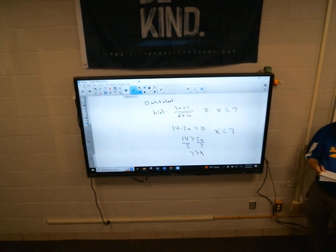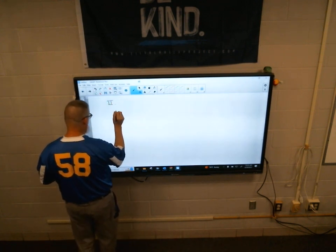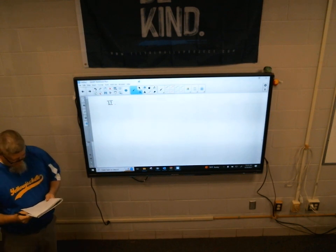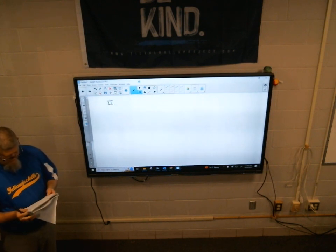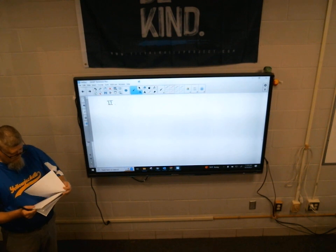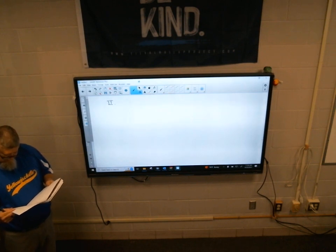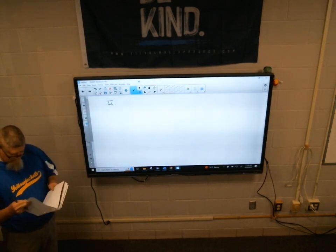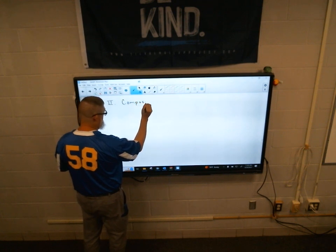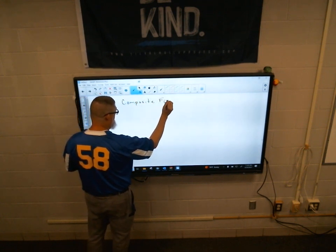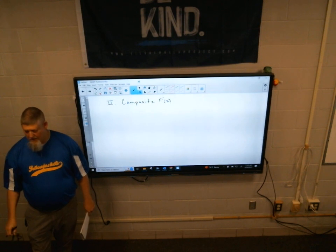Time we have remaining, which is not much. Let's look at Roman numeral 2. Roman numeral 1 was domain. Roman numeral 2, we're going to jump down here. Let's go ahead and jump to composite function. So composite. What word do you see in the word composite? Composition.